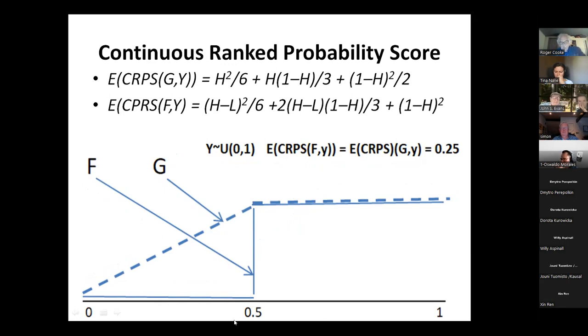If you want a more extreme example of the same thing, we'll let F put all of his mass at 0.5. So he thinks with probability 1, the value is 0.5. And G thinks it's uniformly distributed between 0 and 0.5, whereas, in fact, it's uniformly distributed on 0 to 1. So these two guys also get the same score. In other words, the massive statistical inaccuracy of thinking there's probability 1 for a value that actually never occurs, that gets bought off by his massive overconfidence. So this is just a recipe for disaster. The guy who is most atrociously overconfident can easily end up walking away with all of the weight.